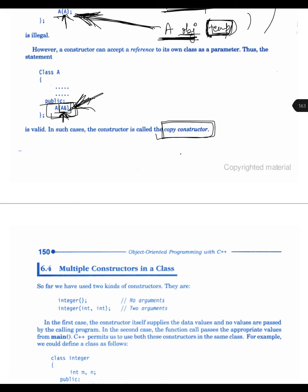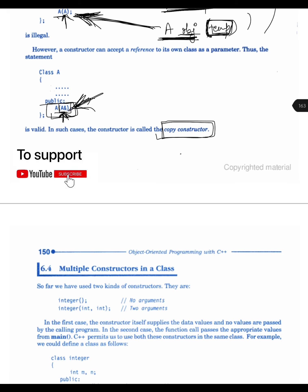Hello everyone, we are back with part 2 of constructors and destructors in C++. In the previous tutorial, we covered why we need constructors and destructors, how to declare and define a constructor, and the difference between default and parameterized constructors. In this tutorial, we are going to cover the copy constructor, constructor overloading, and what destructors are and their use case.